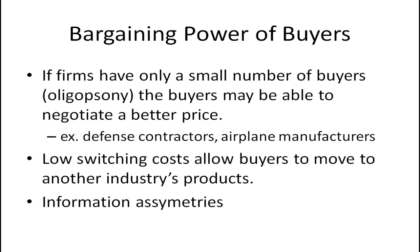Let's take a look at the bargaining power of buyers. The number of buyers is a big factor. If firms have only a small number of buyers, we call this an oligopsony — you've heard of oligopoly, a few sellers; oligopsony means a few buyers. The buyers may be able to negotiate a better price. Think about being a defense contractor — you make missiles. If you're in the United States, there are laws in terms of who you can sell to. You can't simply start selling your missiles to Iran or North Korea just because they offer you a good price. The only buyer is the U.S., and therefore that limits some of your bargaining power.